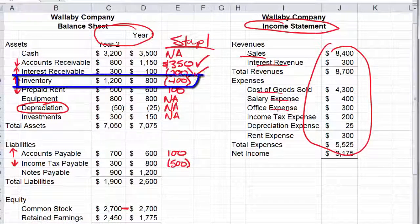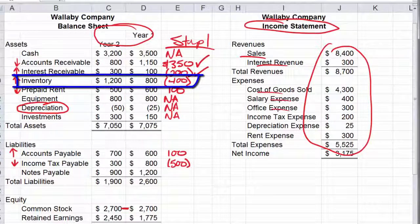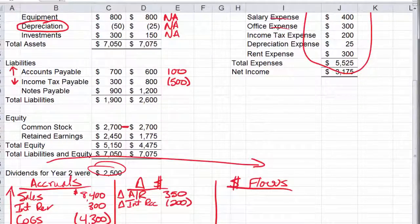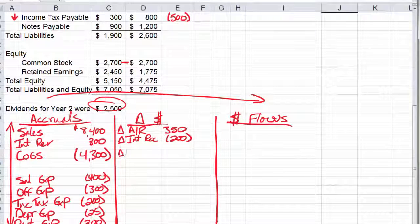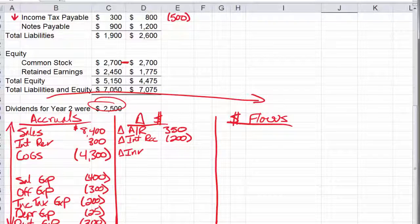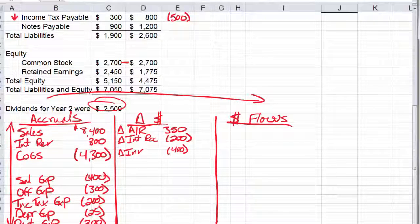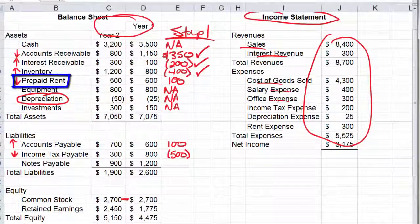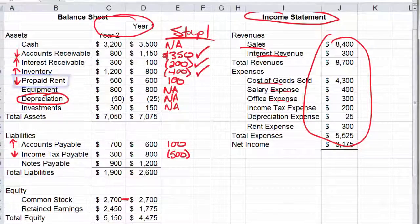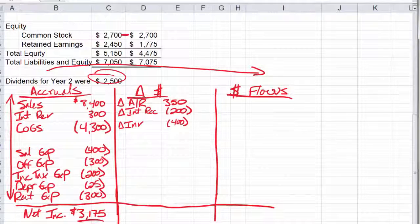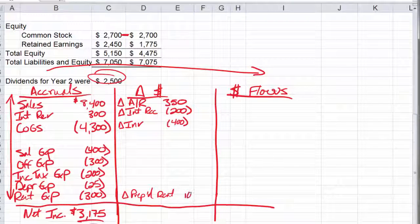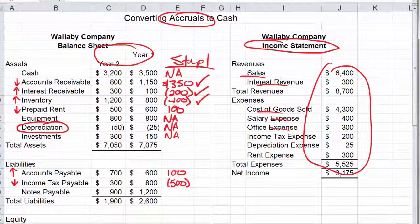Next, we have inventory change for $400. Inventory really would match up with an inventory expense. It's one of the few expenses that has a clever name, we call it cost of goods sold. So we have a change in inventory, negative $400. Prepaid rent probably will match up with rent expense. So change in prepaid rent, positive $100. We'll check that off.